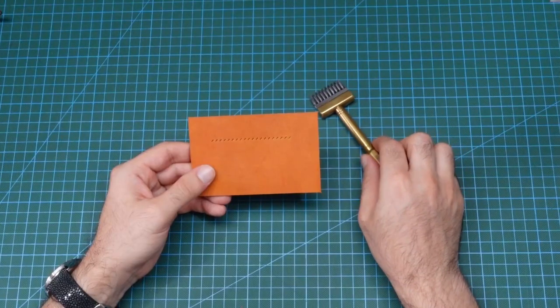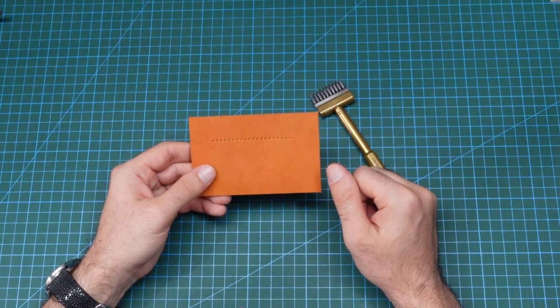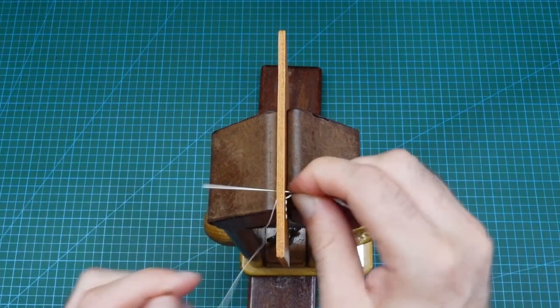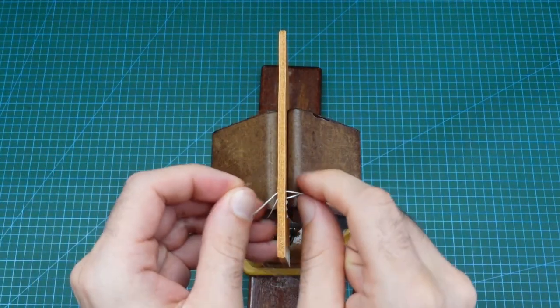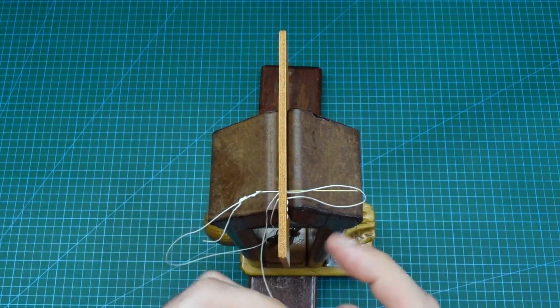The needles that I will use for this top row of stitches are the John James 004 needles which is the smallest of the three sizes. The stitching method I am using is the saddle stitching method I always use for my projects, which I have made a few videos on already.